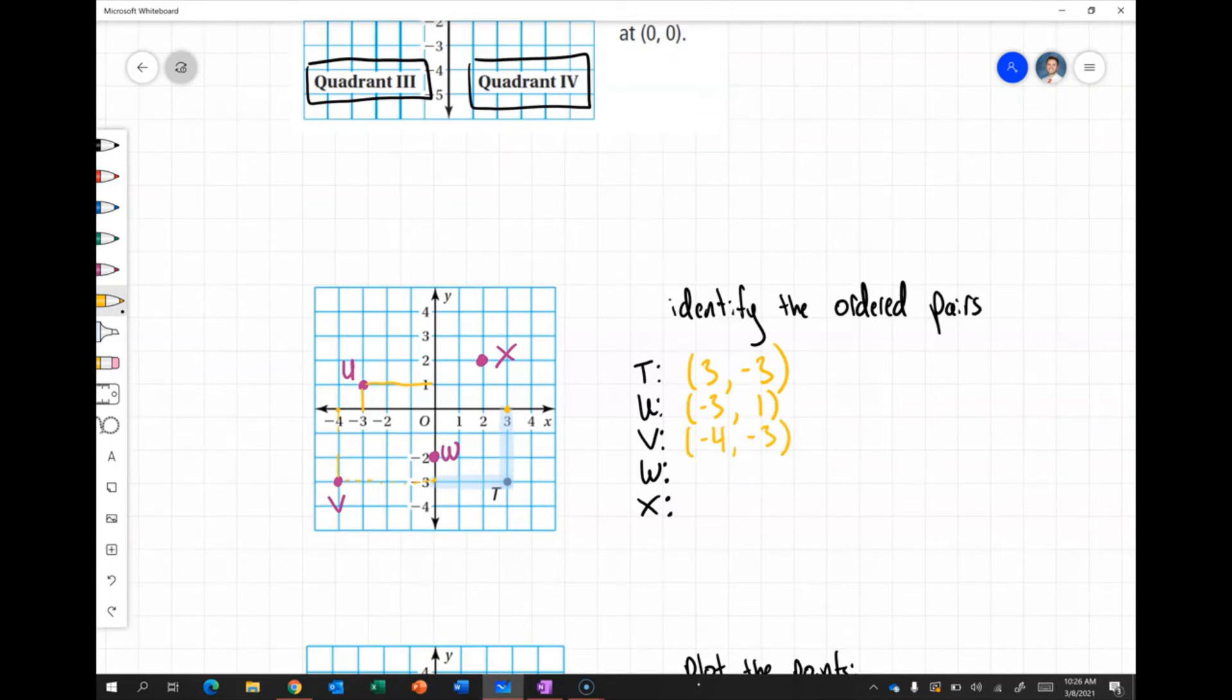Then I see W. W is right here at 0 on the x-axis and 2 on the y-axis. So that would be 0, negative 2.